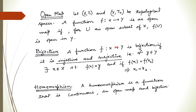Bijection: a function f from X to Y is a bijection if it is injective and surjective — that is, one-to-one and onto. One-to-one means whenever f(x1) = f(x2), then x1 = x2. Onto means for all y in the co-domain, there exists some point in the domain such that f(x) = y. A homeomorphism is a function which is continuous, an open map, and bijective. If any mapping satisfies all three, it is a homeomorphism, and many properties become invariants.